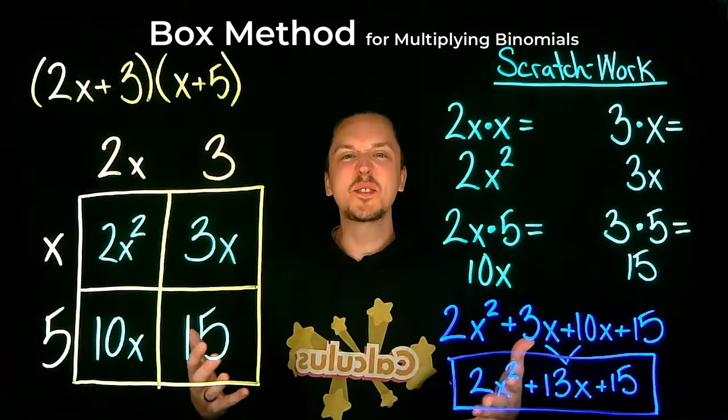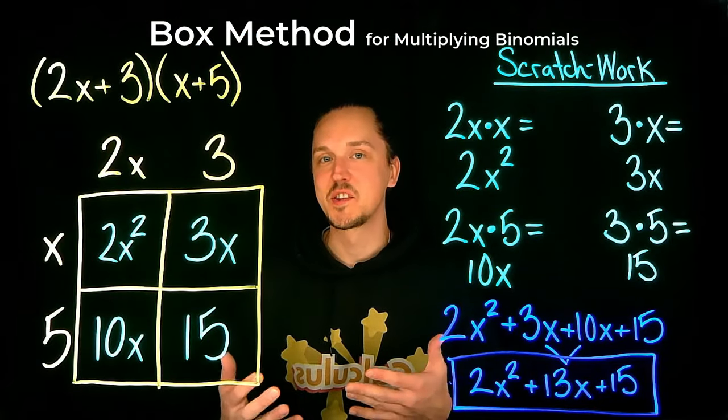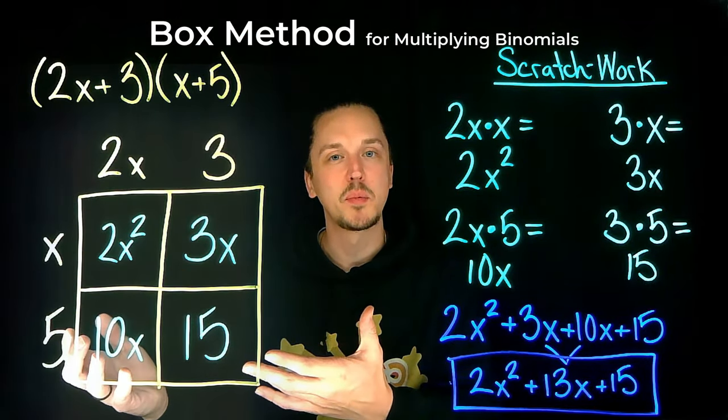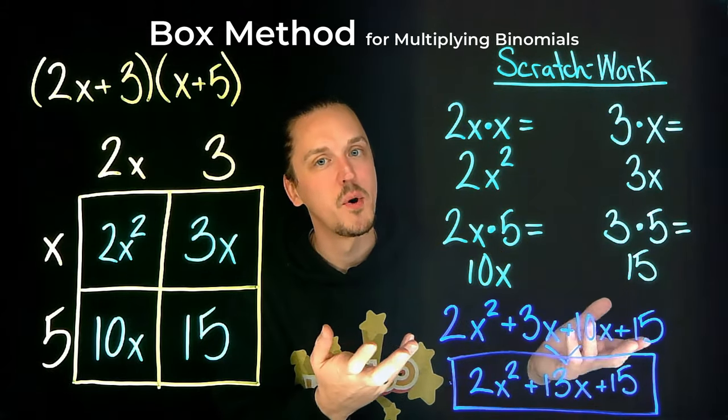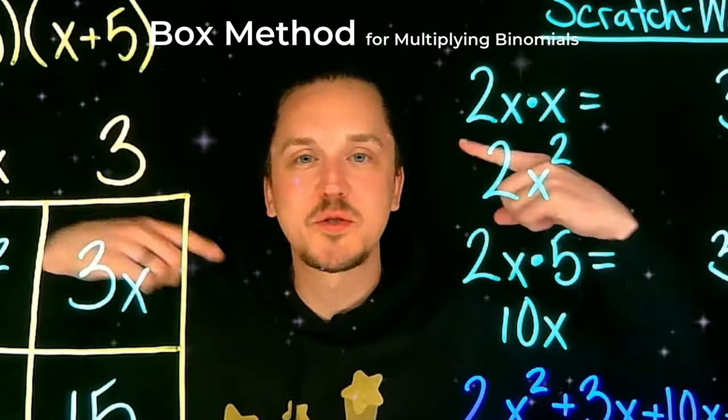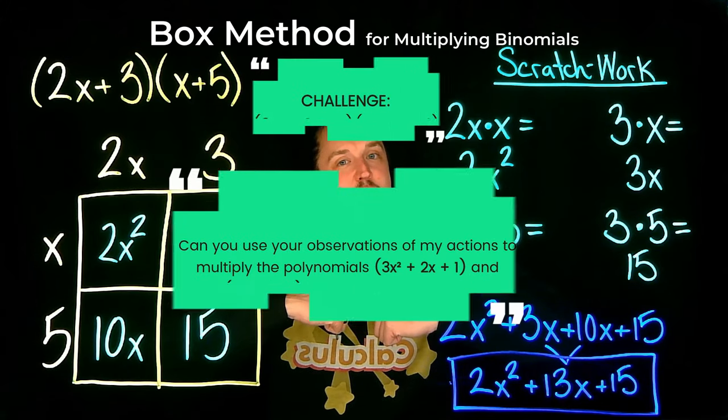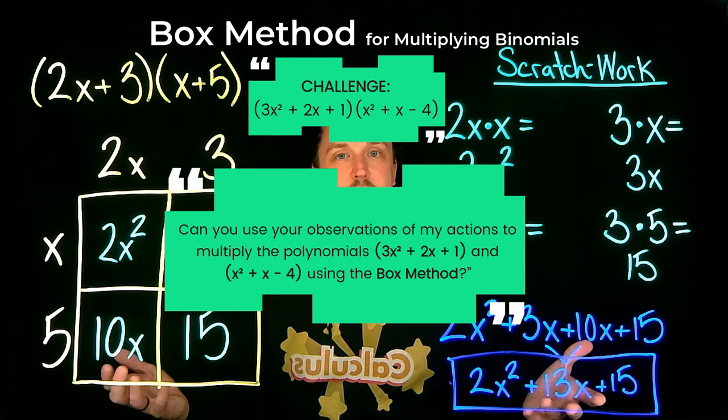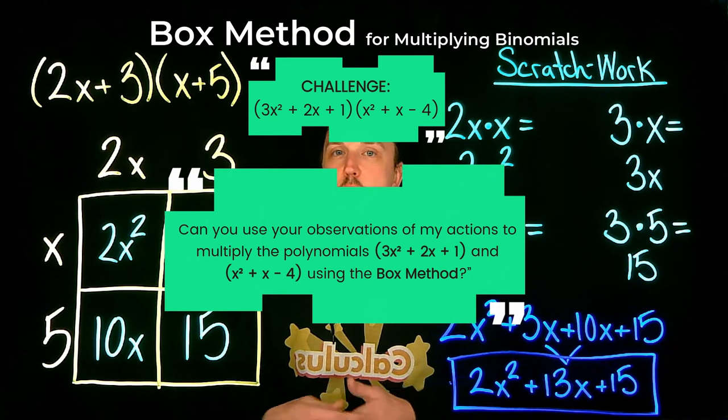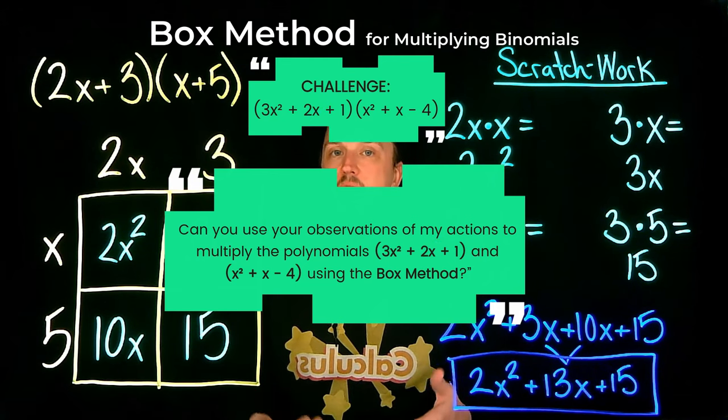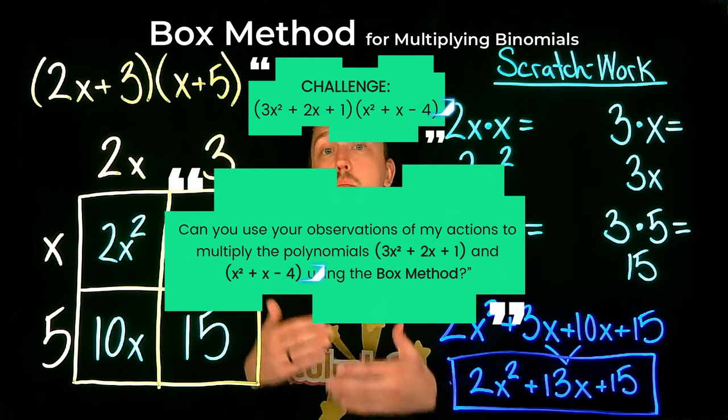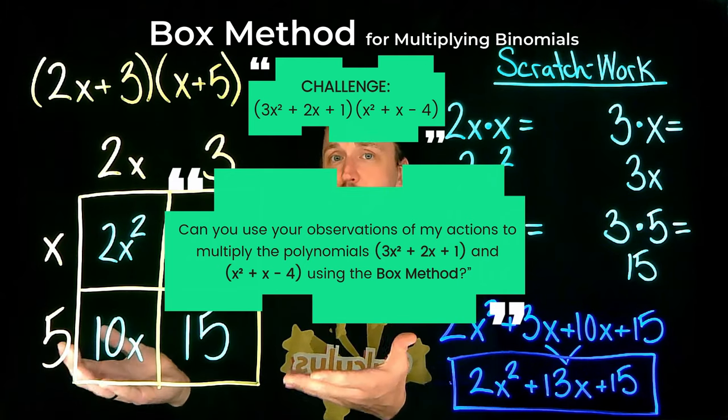And there you have it! Just look at how each term interacts with the other. The box method organizes the problem and ensures we keep track of every term as we perform the multiplication. Now, with your wheels turning, I have a challenge for you to try on your own. Can you use your observations of my actions to multiply the polynomials 3x² + 2x + 1 and x² + x - 4 using the box method?